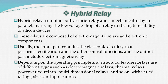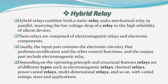Usually the input part of a hybrid relay contains the electronic circuitry that performs rectification and other control functions, and the output part includes an electromagnetic relay. Depending on operating principle and structural features, relays are of different types such as electromagnetic relays, thermal relays, power varied relays, multi-dimensional relays, and so on, with varied ratings, sizes, and applications.